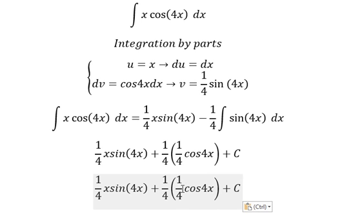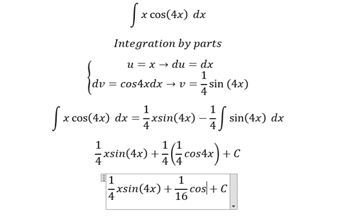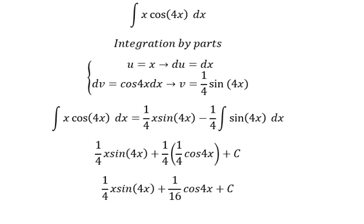1 over 4 with 1 over 4 we will have 1 over 16 cosine 4x. This is the end, thank you for watching.